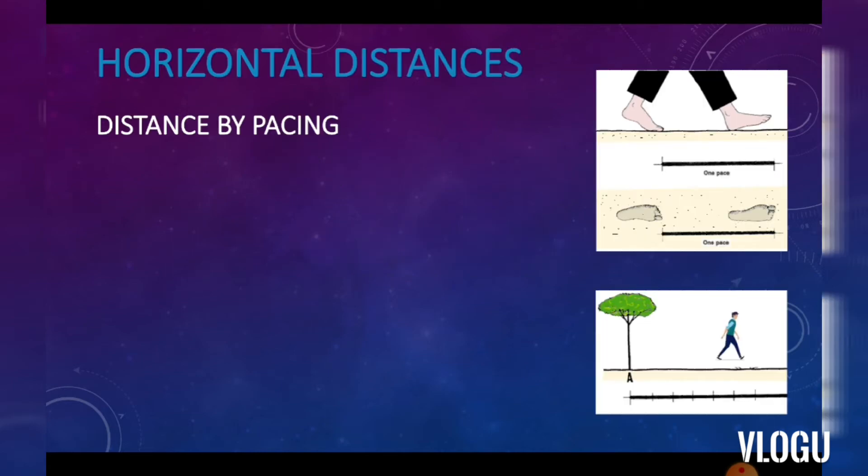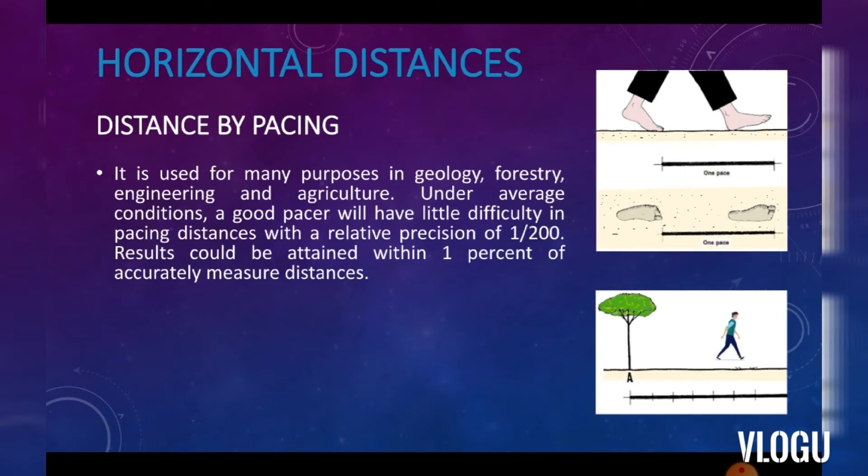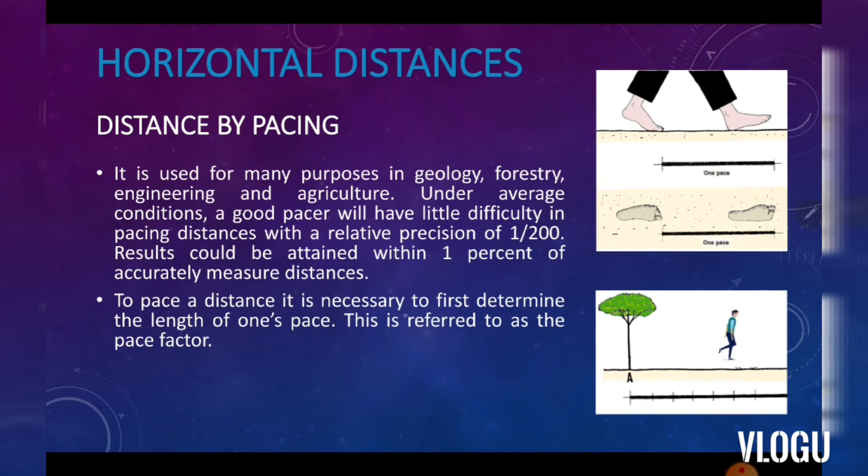Let's start with pacing. What is pacing? This is a method of measuring a distance by simply walking and counting the number of steps taken. It is used for many purposes in geology, forestry, engineering, and agriculture. Under average conditions, a good pacer will have little difficulty in pacing distances with a relative precision of 1 over 200. Results could be attained within 1% of accurately measured distances. To pace a distance, it is necessary to first determine the length of one's pace. This is referred to as the pace factor.